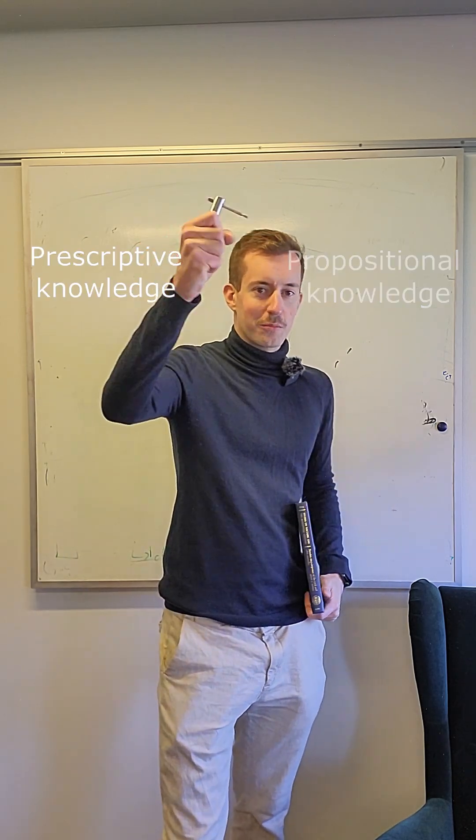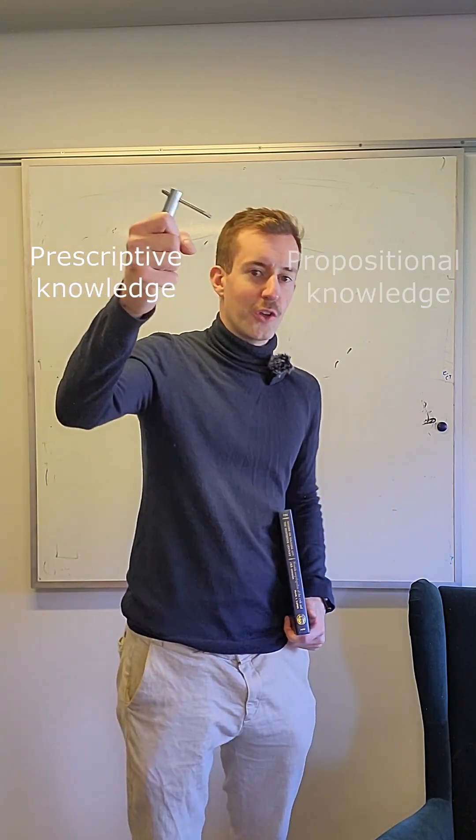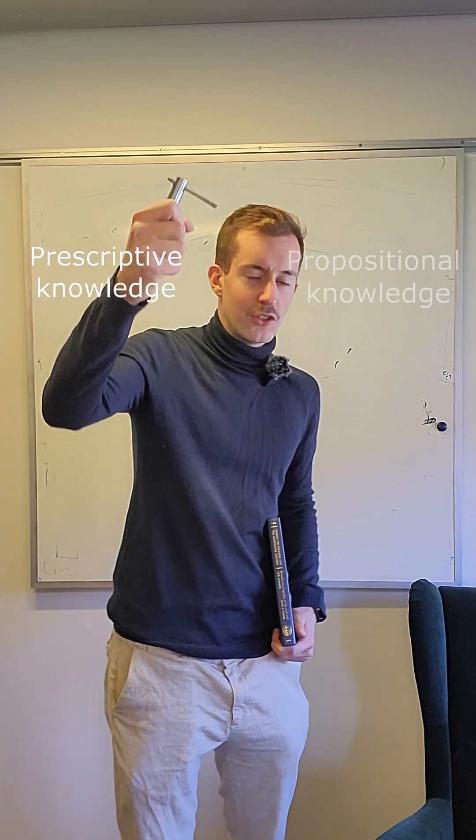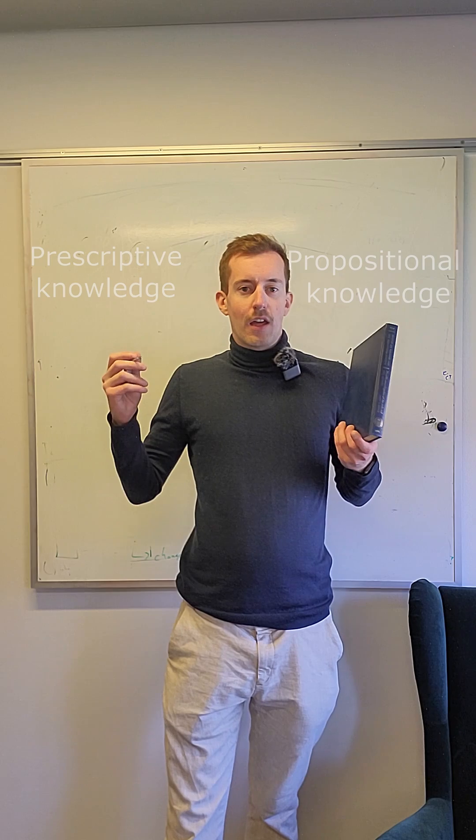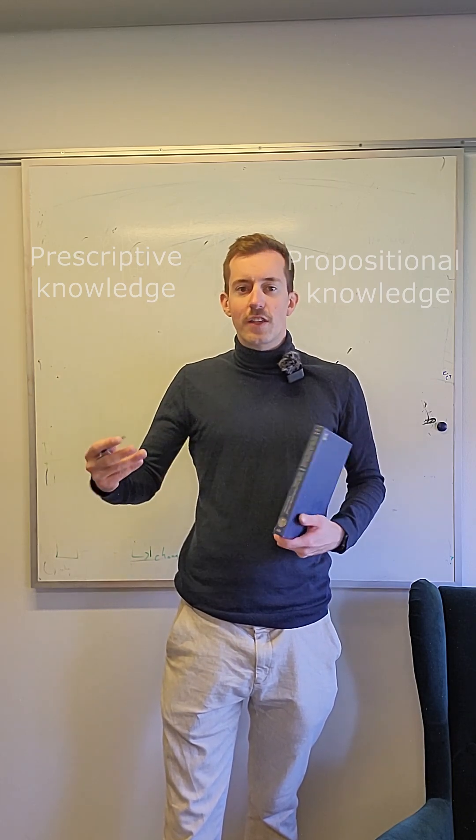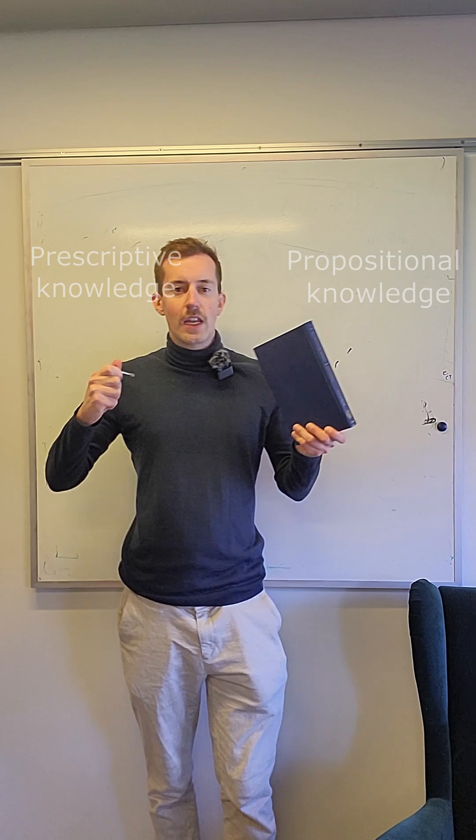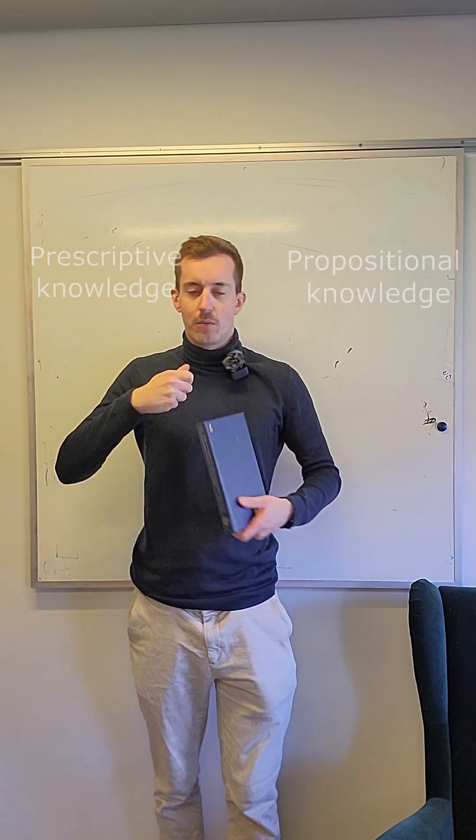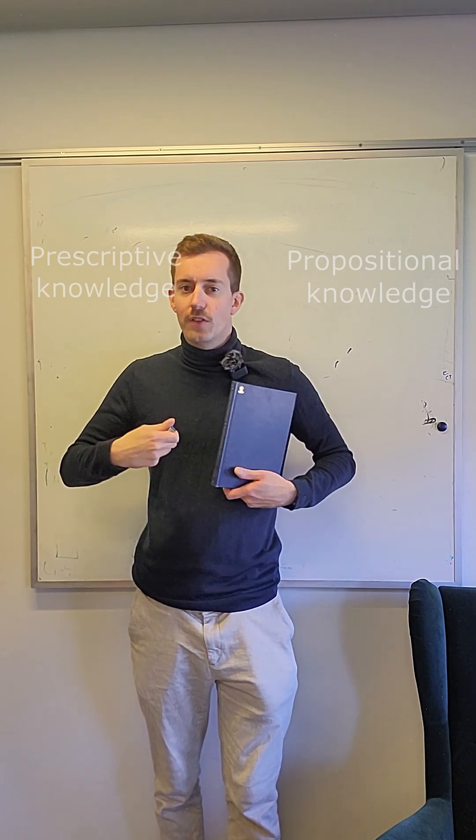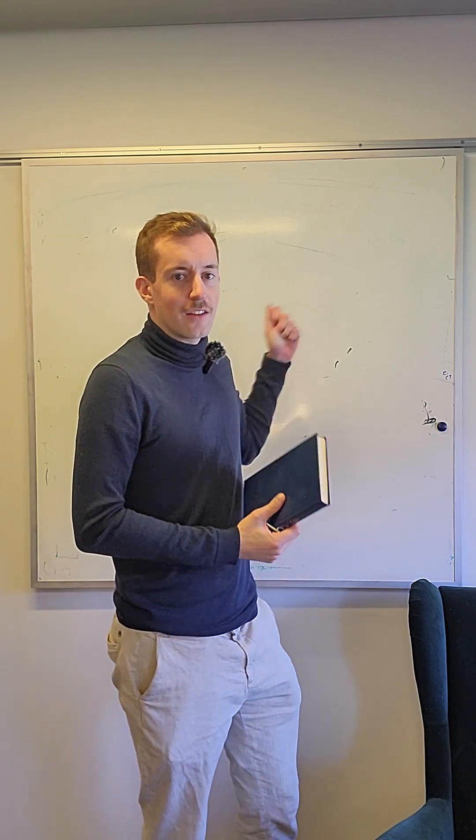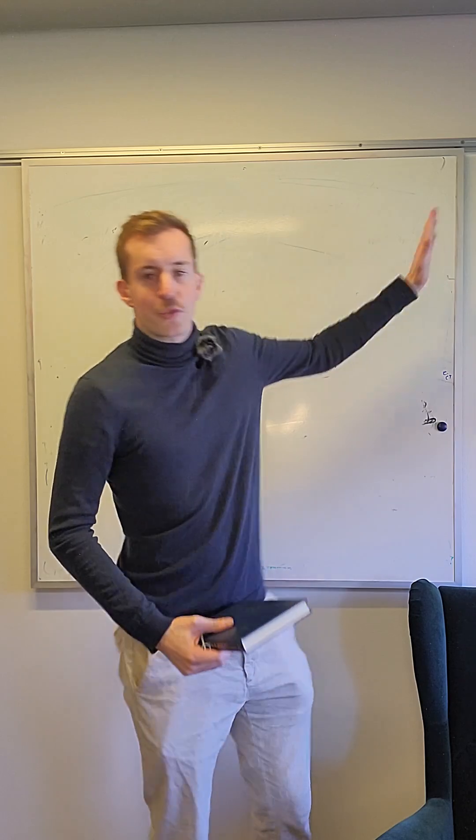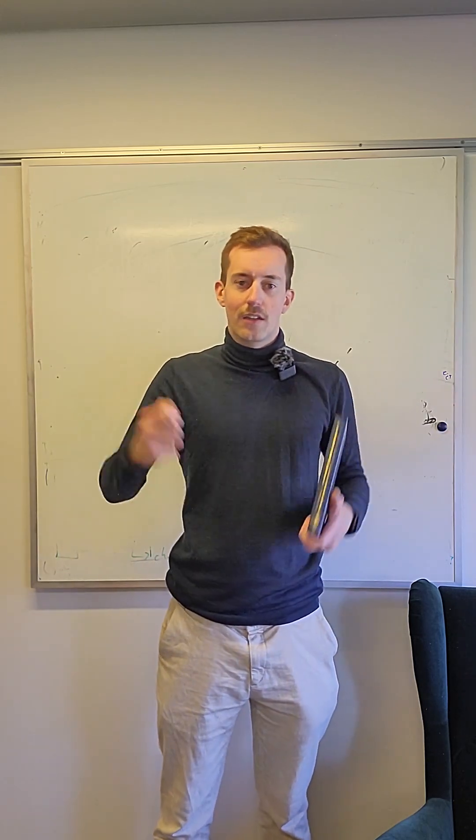Then you've got prescriptive knowledge, it is the how to in nature, how to change nature. It is basically technology. Around the year 1750, somewhere in the 18th century, these two really started to interact with each other. And they produced a positive feedback loop. And this is why we got this upshoot in GDP.